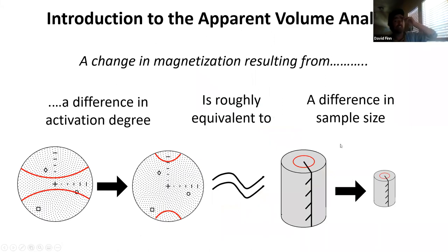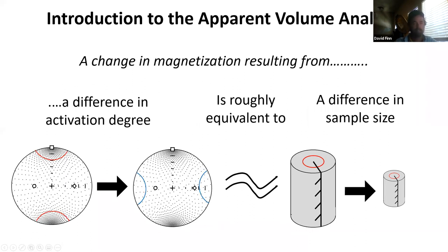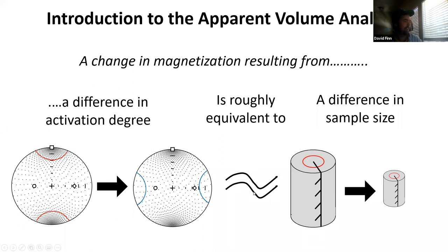I want to introduce a simple analogy to help grasp these ideas. This analogy assumes that a change in magnetization resulting from a change in activation degree is roughly equivalent to a change in magnetization that would result from a change in sample size. When the sample itself is anisotropic, the activation degree is also dependent on field orientation — this is what we called in our last paper an anisotropy in the concentration of activated grains, or ACAG.